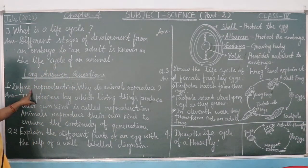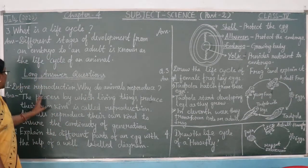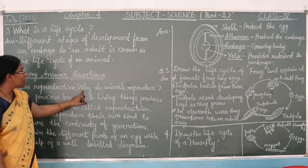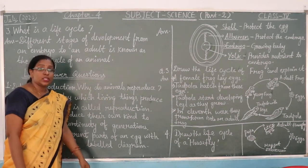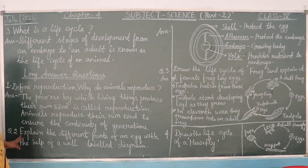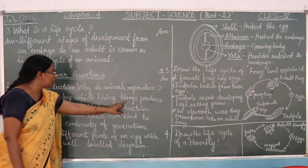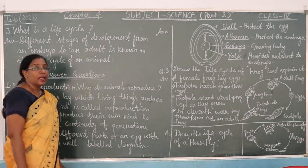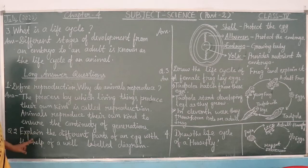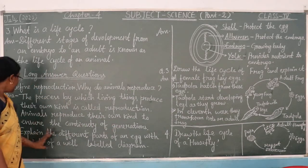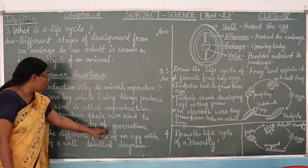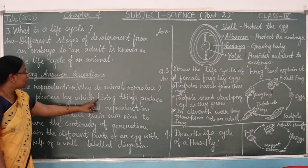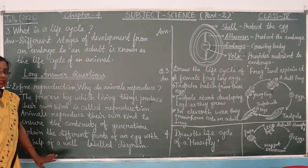The first question is: define reproduction. Why do animals reproduce? The process by which living things produce their own kind is called reproduction. Animals reproduce their own kind to ensure the continuity of the generation.